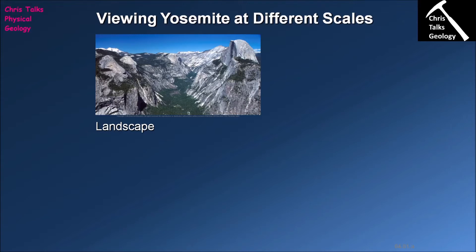We're going to look at four different situations and think about how a geologist would approach these environments at different scales. We'll begin by looking at this image of Yosemite National Park.